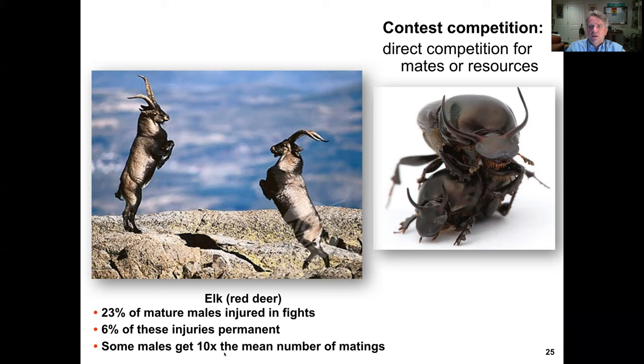Sperm competition is competition between the gametes of two or more males to fertilize the eggs of a single female. This also happens in plants, where multiple pollen grains can land on the stigma — the top of the female reproductive part of a flower.